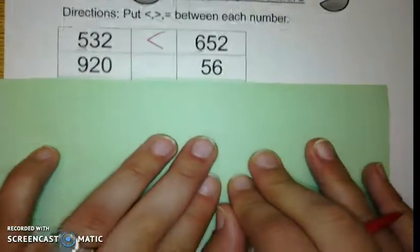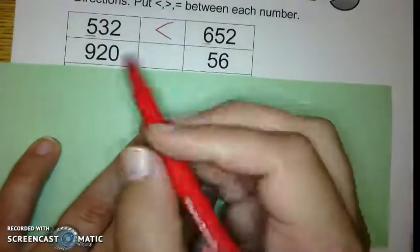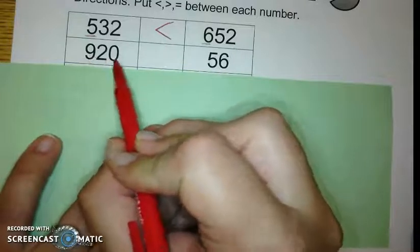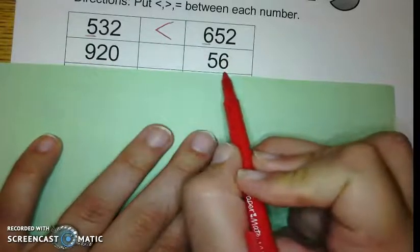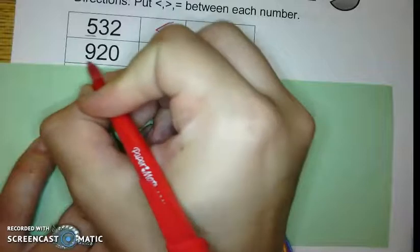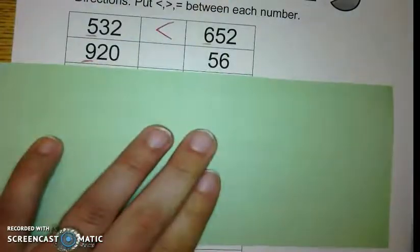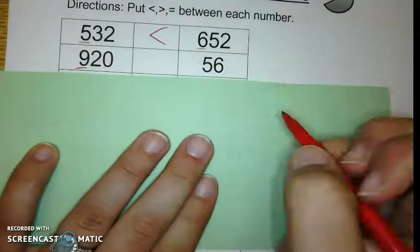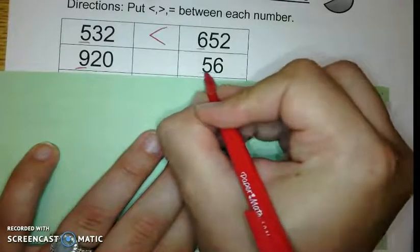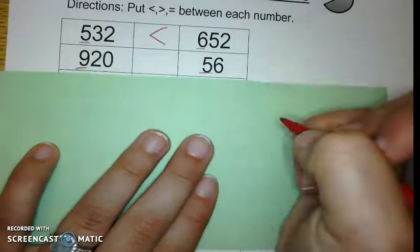So let's try another one together. 920, 56. 920, the highest place value is in the hundreds. For 56, the highest place value is the 5, which is in the tens.